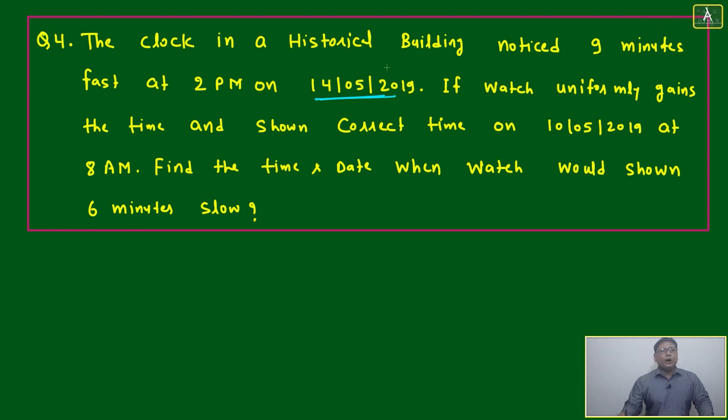The clock in a historical building was noticed 9 minutes fast at 2 PM on 14/5/2019. If watch uniformly gains the time and shows correct time - in the last question I have given you the idea when watch is gaining the time but initially it was showing slow, and slowly it is gaining the time.